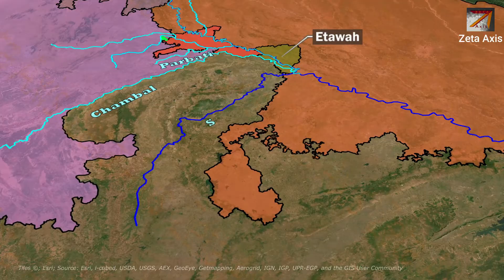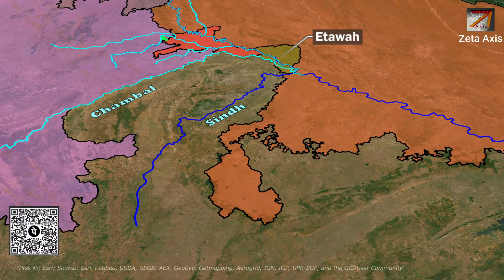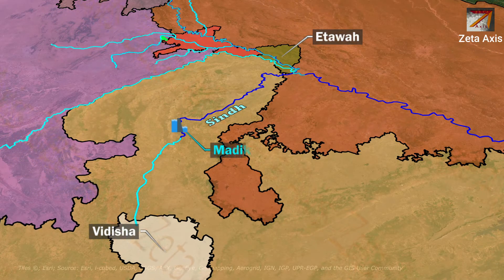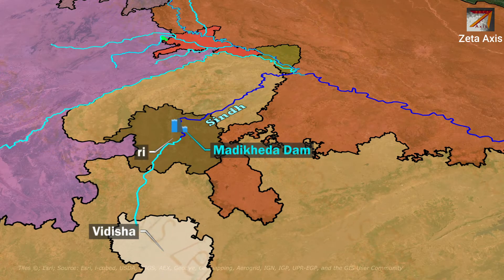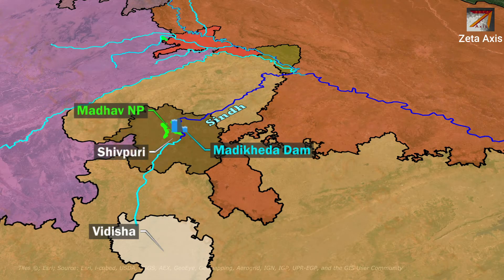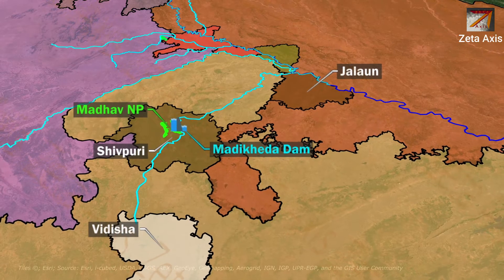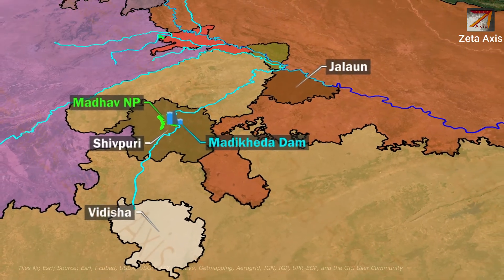Just after the Chambal river, the Sindh river joins the Yamuna in Itawa district of Uttar Pradesh. The Sindh river originates on the Malwa Plateau in Vidisha district and flows in a north to northeast direction. Manikhera Dam has been constructed across the Sindh river in Shivpuri district. Madhav National Park is also located on the banks of the Sindh river. The Sindh river enters UP through Jalaun district and joins the Yamuna just downstream of the Chambal-Yamuna confluence.